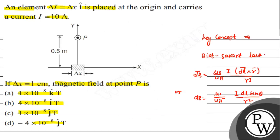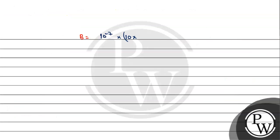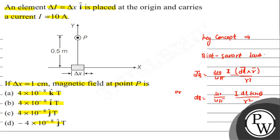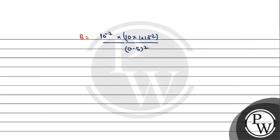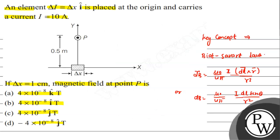Substituting the values: B = 10^-7 × 10 × 1×10^-2 / (0.5)². This gives 10^-7 × 10 × 10^-2 / 0.25. Simplifying: 1×10^-8 / 0.25 = 4×10^-8 tesla.